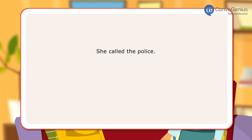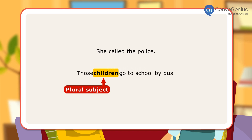There must be subject-verb agreement in a sentence. For example: Those children go to school by bus. The plural subject 'children' takes the plural verb 'go'.